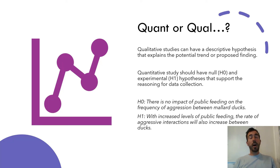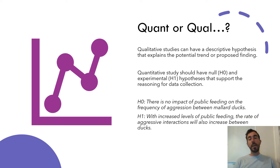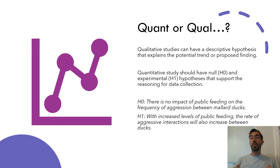Hypotheses can differ between quantitative and qualitative studies. Qualitative studies can have a descriptive hypothesis that explains the potential trend or proposed finding — this is simply a statement written before the methods. For example, if instead of observing duck behaviour I was looking at people's opinions about feeding ducks, my hypothesis could be: 'People that spend more time feeding the ducks are going to be more attuned to their behaviour than people that spend less time feeding the ducks.' It's descriptive and explanatory, but it cannot be tested in the same way as a quantitative hypothesis.